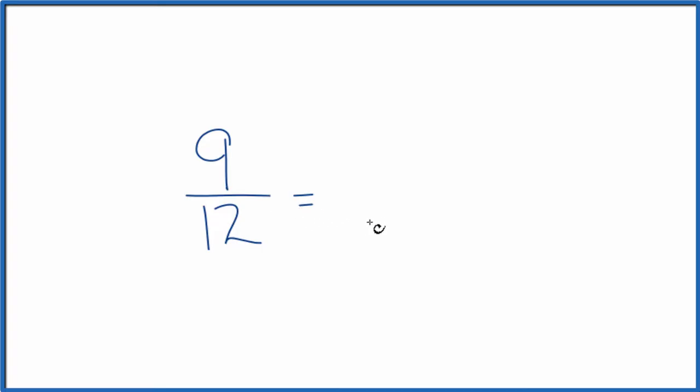First off, with equivalent fractions, what we're trying to do is find another fraction that is equal to 9/12, but has a different numerator and denominator. We could multiply 9/12 by 1. That would still give us the same value.